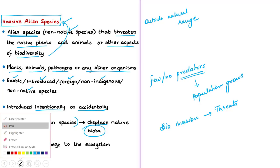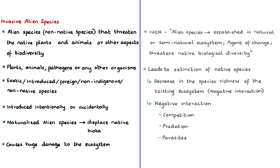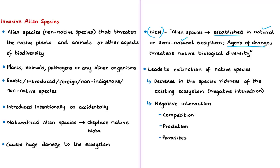That is why even the IUCN — the International Union for Conservation of Nature — defines invasive alien species as an alien species which becomes established in natural or semi-natural ecosystems or habitats. It is an agent of change and it threatens native environmental species.